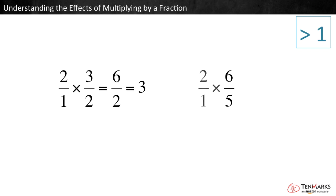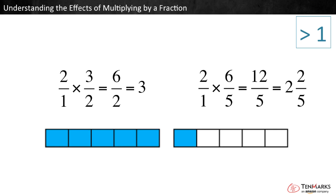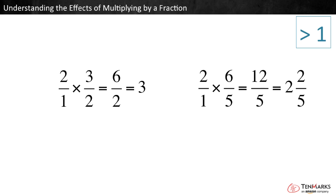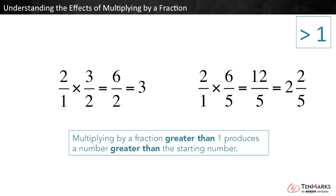When we multiply 2 times 6 fifths, we get 12 fifths, or 2 and 2 fifths, which is also greater than 2. This makes sense — multiplying by 6 fifths is like taking 6 fifths of something. That's more than one whole group, so the result would be more than what you started with. Multiplying by a fraction greater than 1 produces a number greater than the starting number.